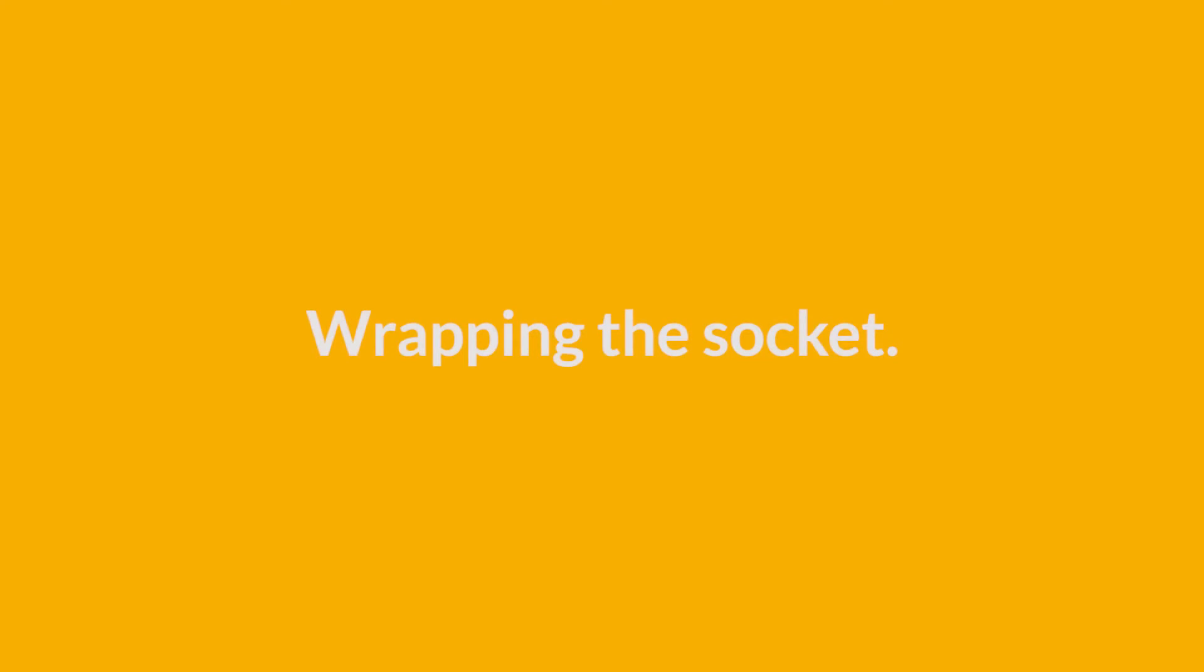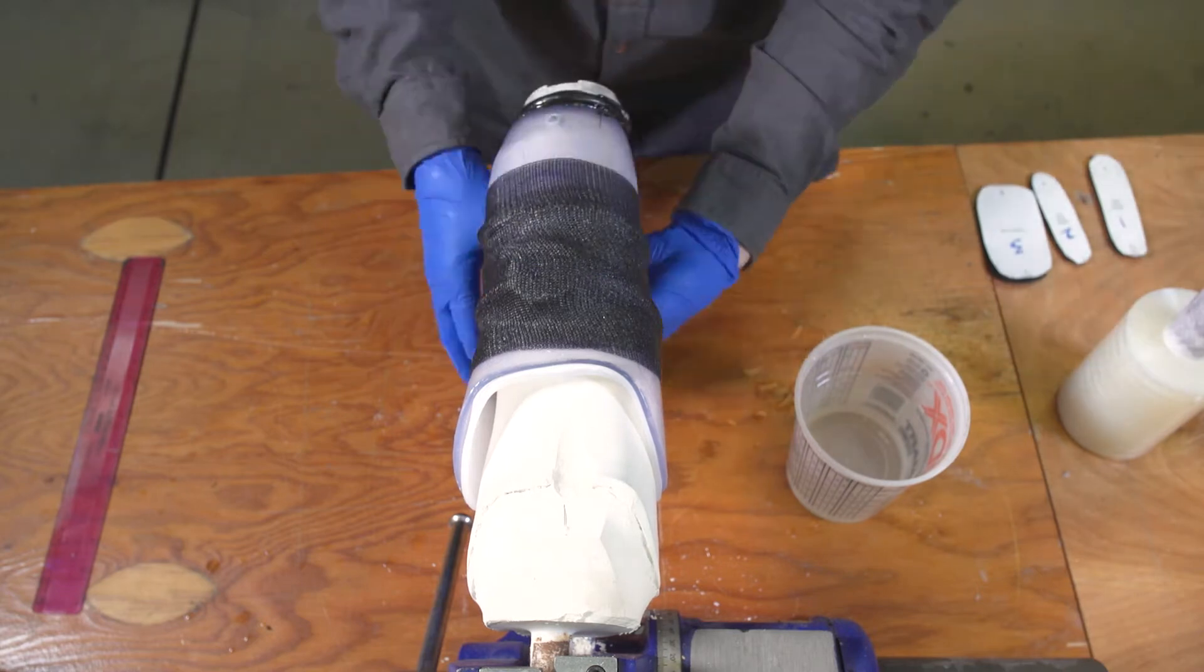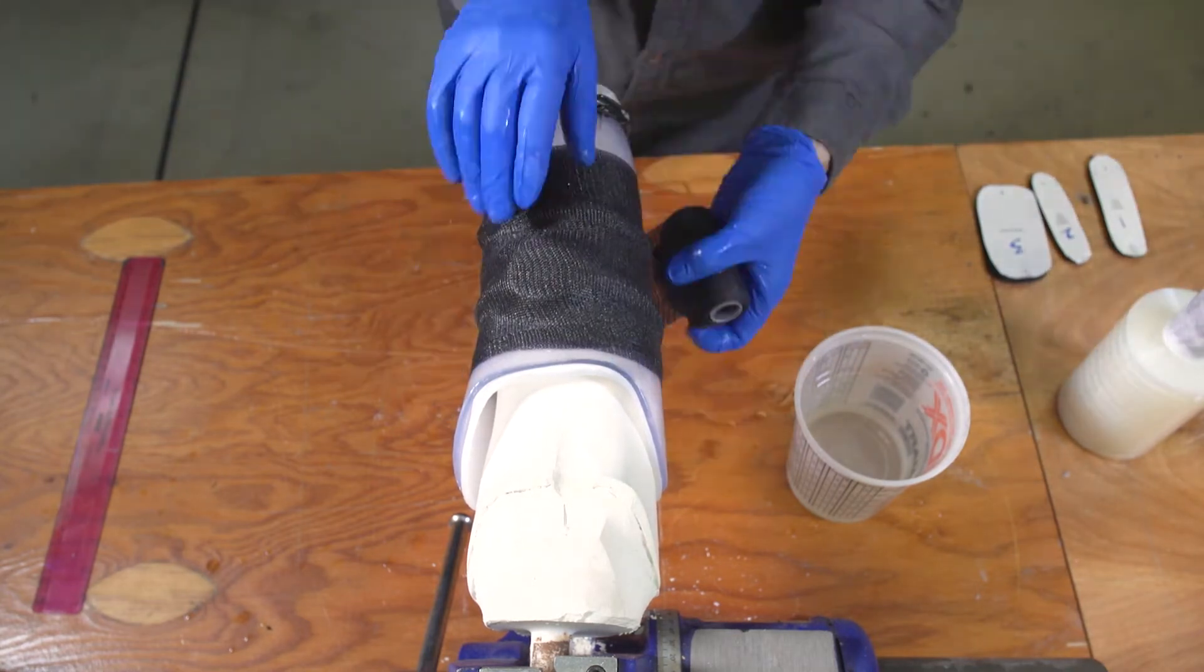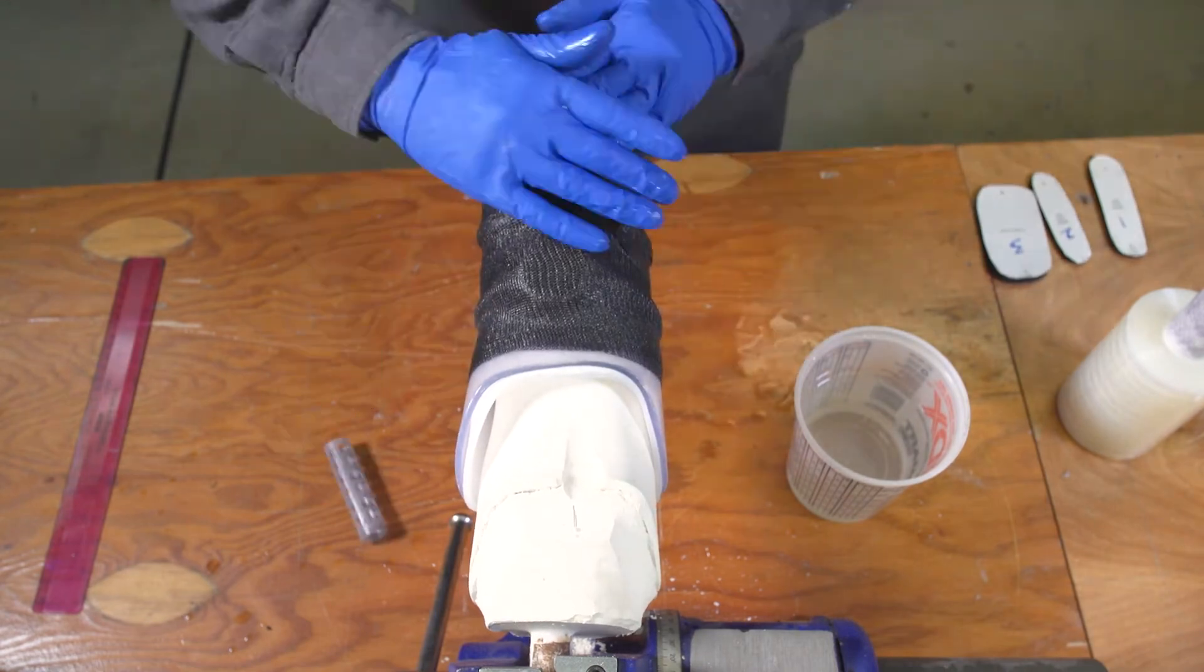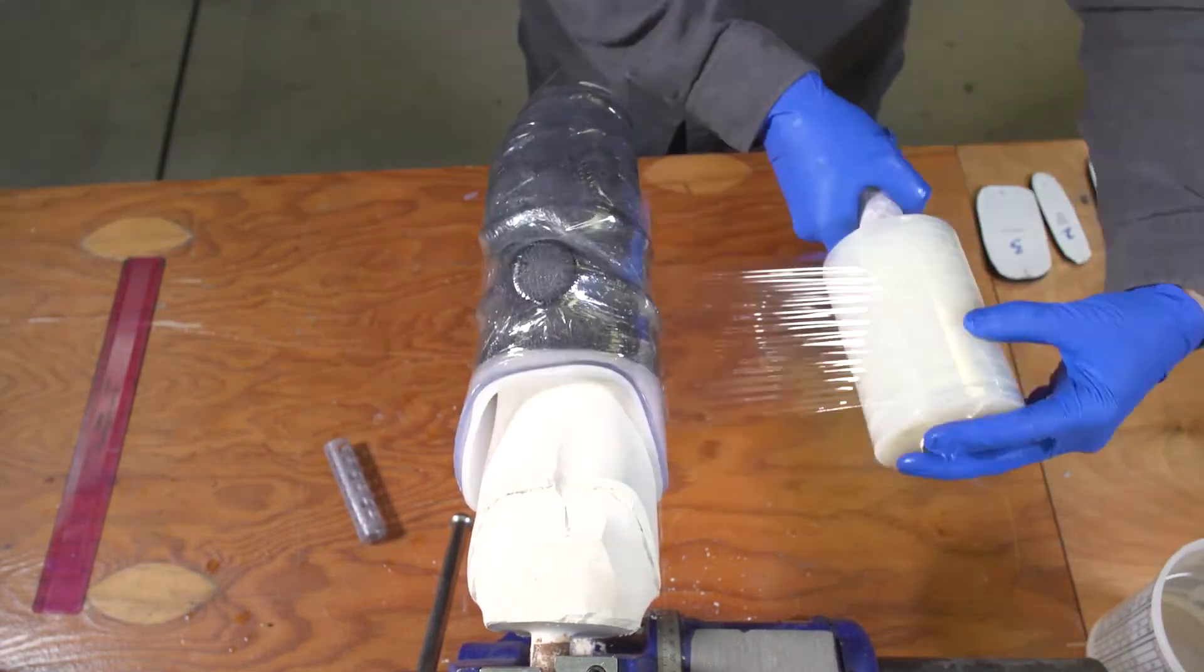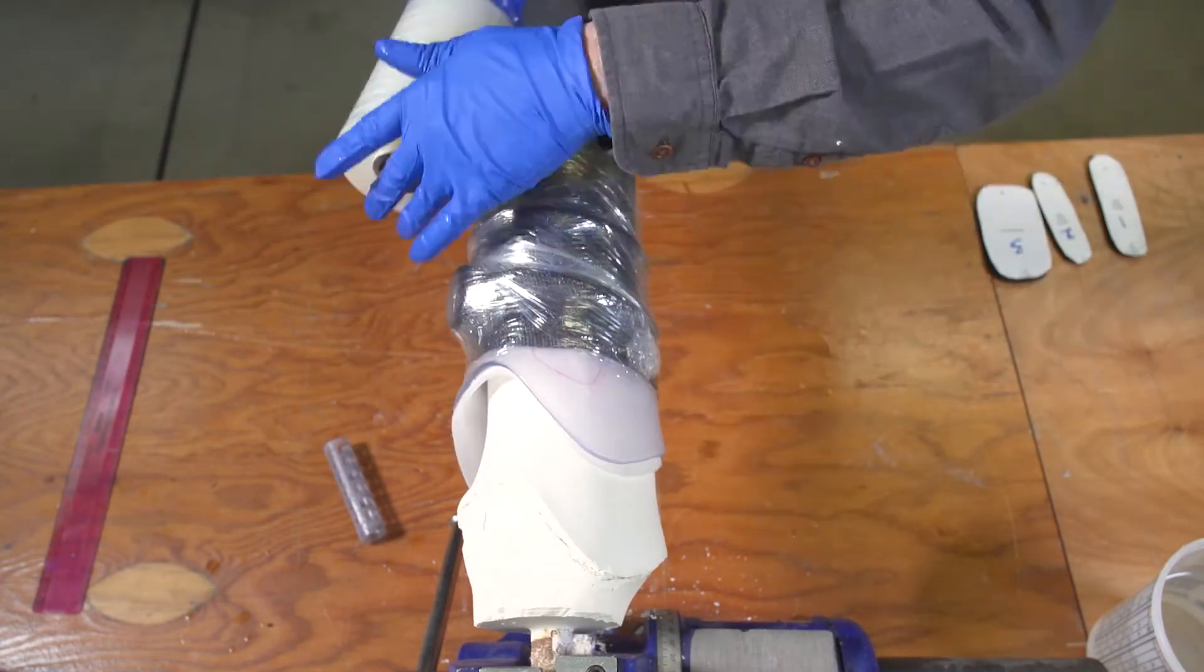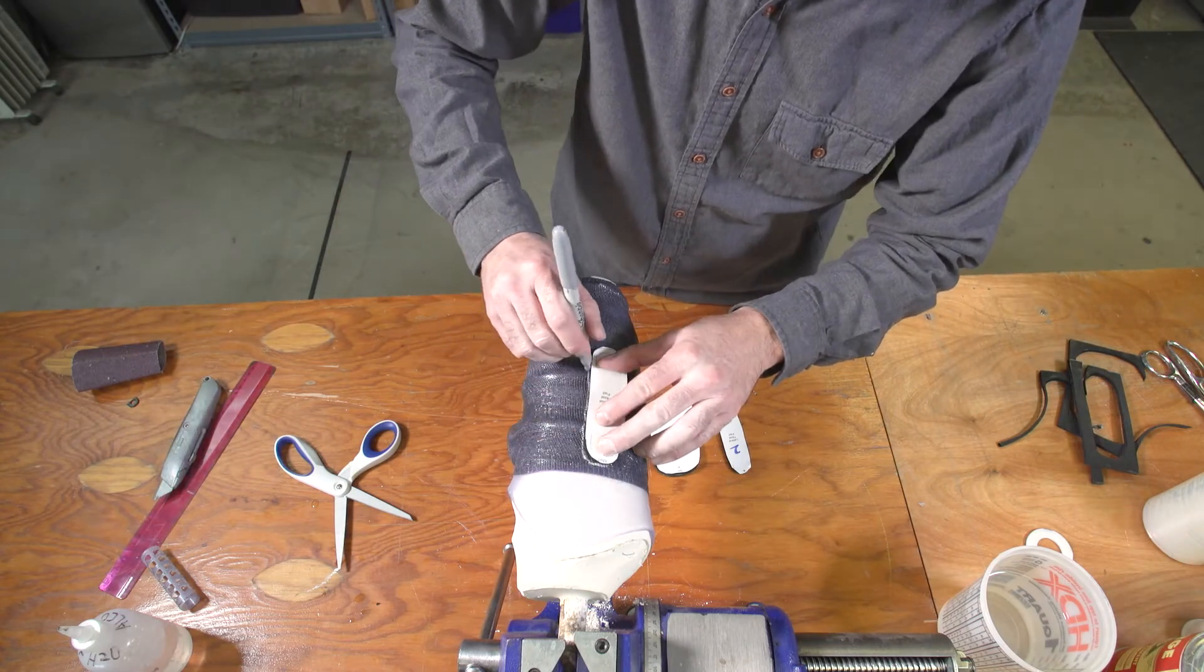Wrapping the socket. Now, wrap the whole thing, socket, tubing, and dial base, in two layers of fiberglass casting tape. Then, to make sure the fiberglass fully bonds, tightly wrap the whole thing in clear plastic wrap. Once the fiberglass has set, about two minutes, remove the plastic and re-mark your panel locations on the socket.